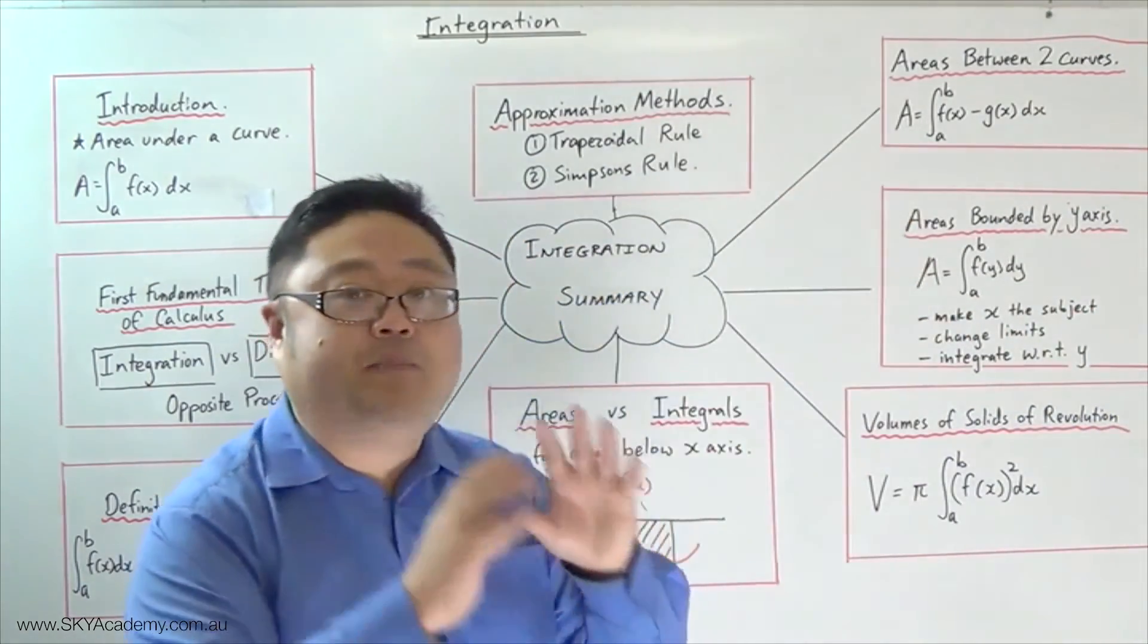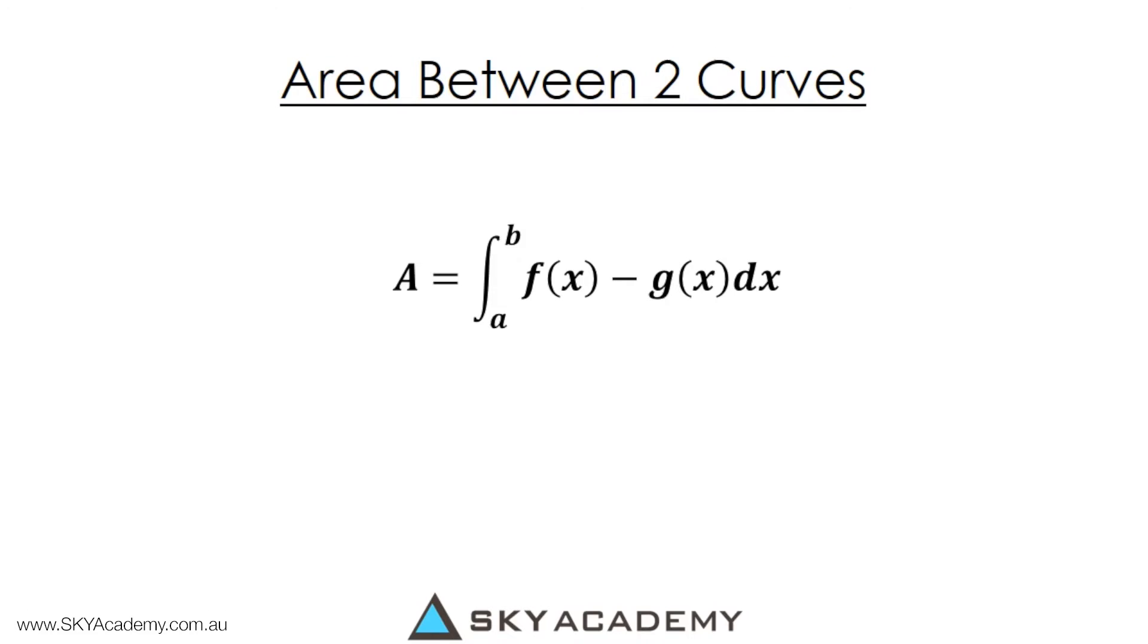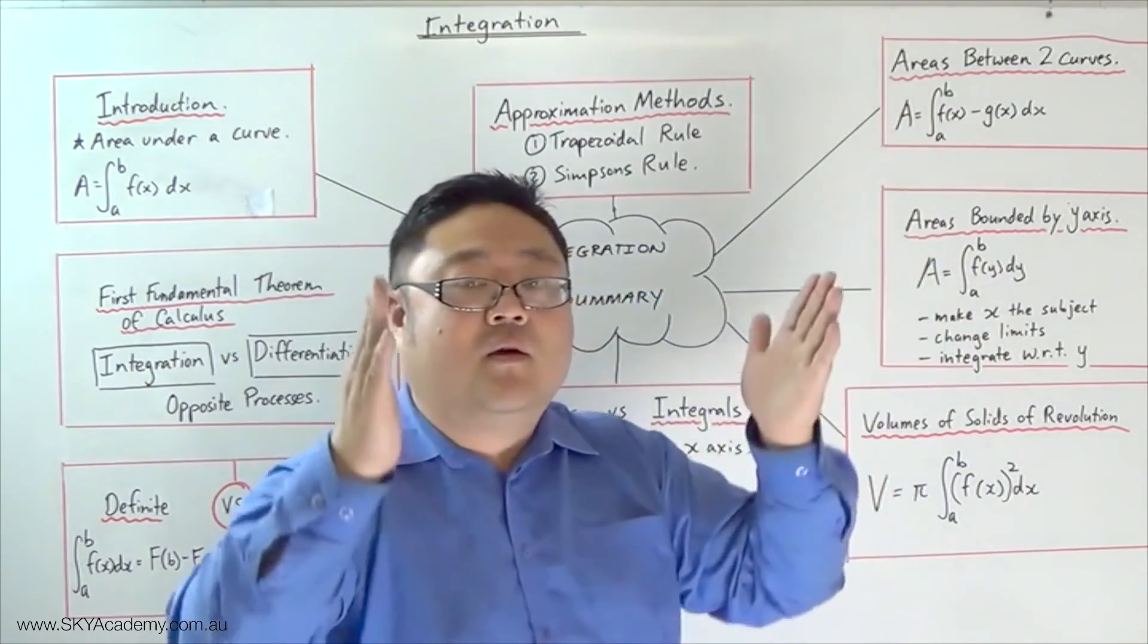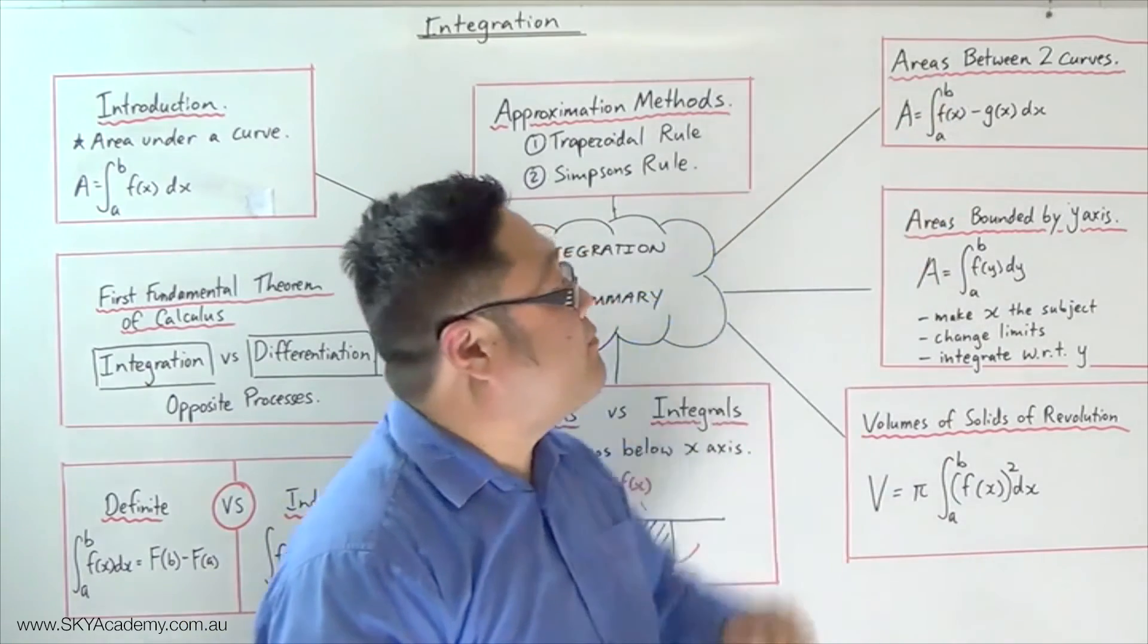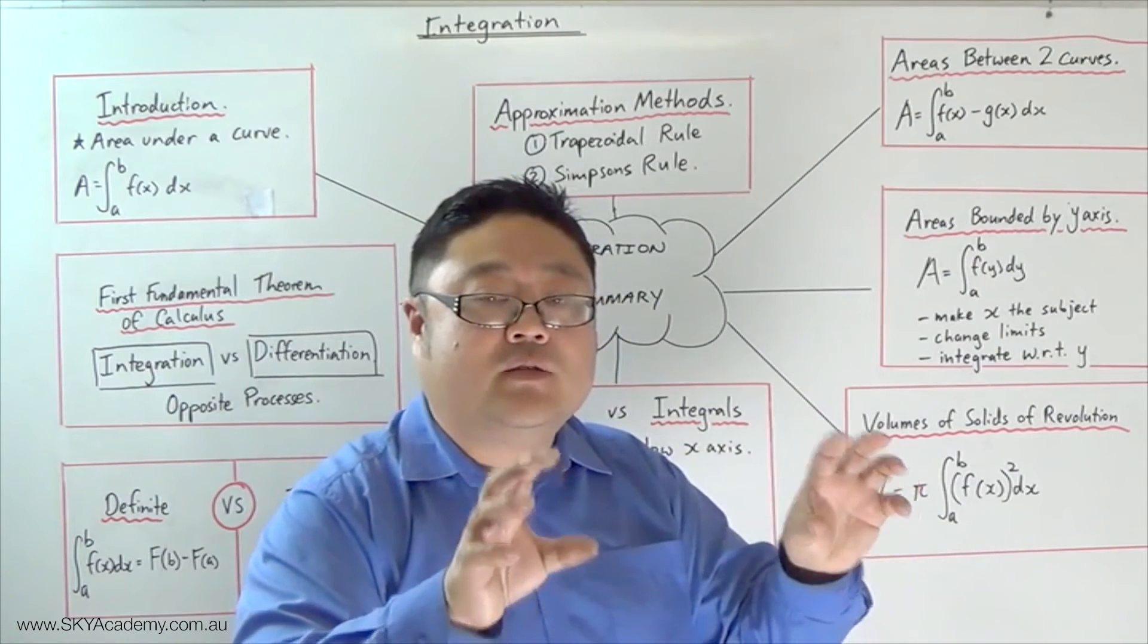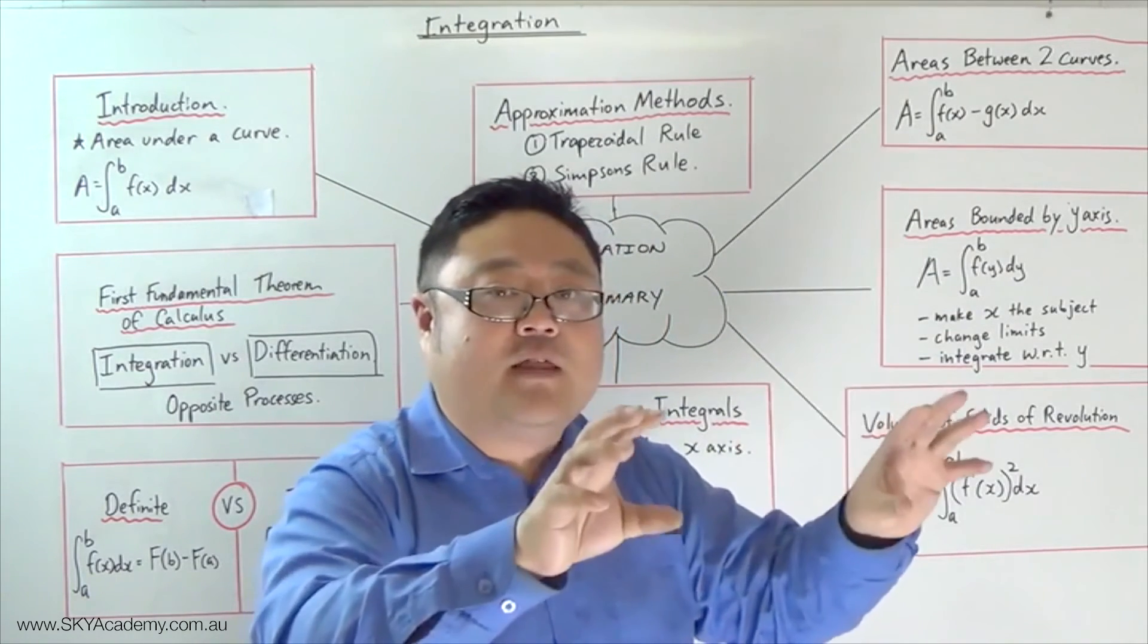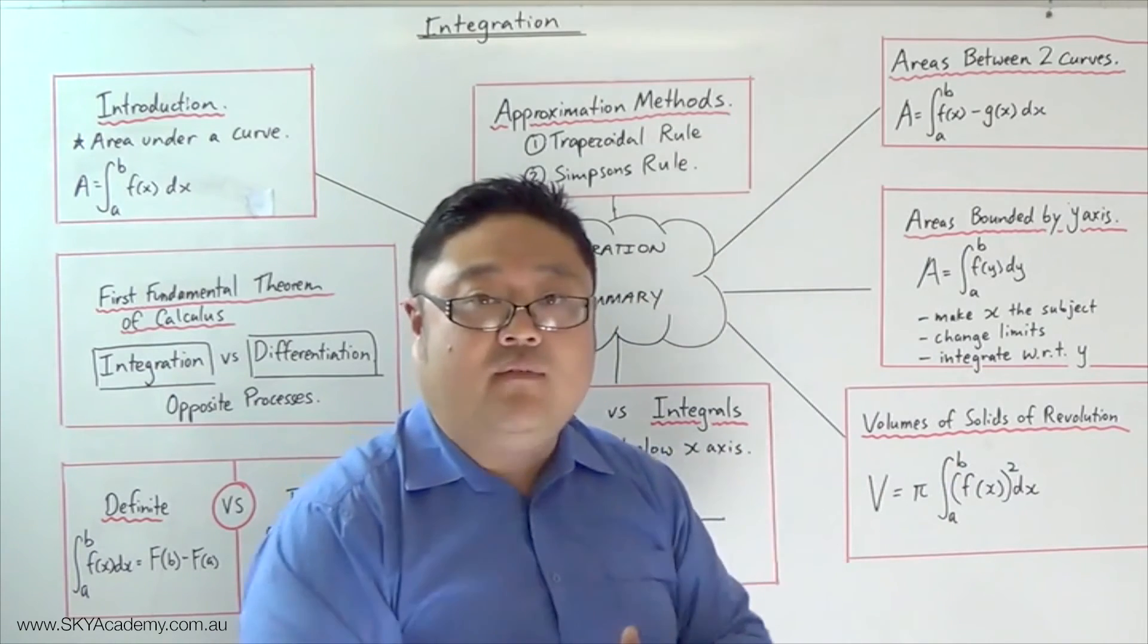We then looked at areas between two curves. The area between two curves is given by the area of the top curve minus the area underneath the bottom curve, which basically is the integral of the top curve minus the integral of the bottom curve between the limits where they intersect. You need to find the points of intersection, the x-coordinates of which will be a and b. We also noted that the difference of the integrals is also the integral of the differences. We can either take the two curves, integrate them separately and subtract, or we can subtract the two functions from each other and then integrate. Both will give you the same answer.